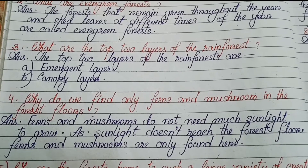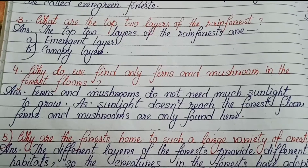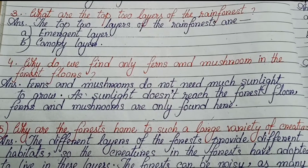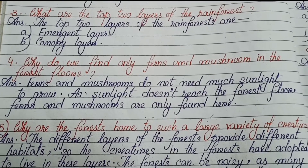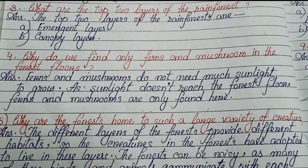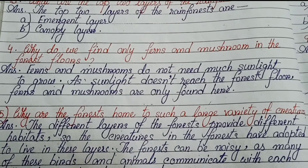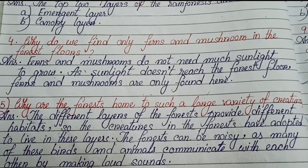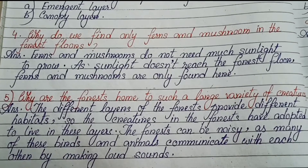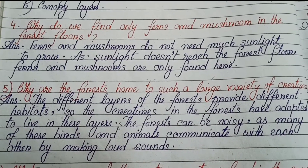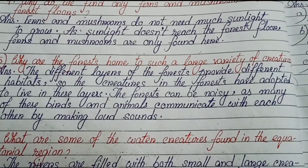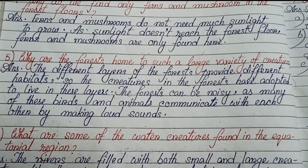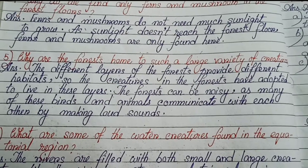Number 4: Why do we find only ferns and mushrooms in the forest floor? Ferns and mushrooms do not need much sunlight to grow. As sunlight doesn't reach the forest floor, ferns and mushrooms are only found here. Number 5: Why are the forests home to such a large variety of creatures? The different layers of the forest provide different habitats, so creatures have adapted to live in these layers.